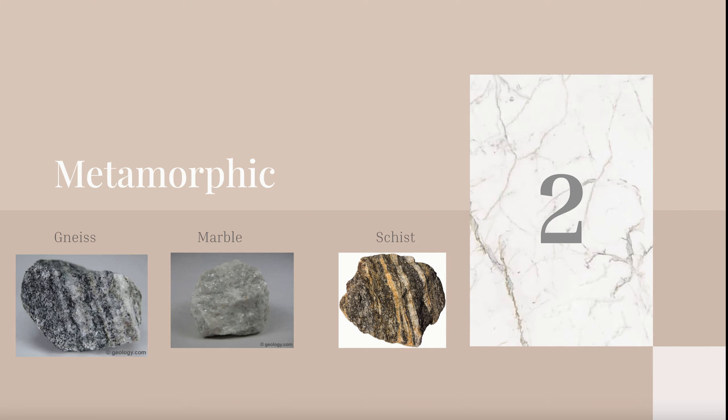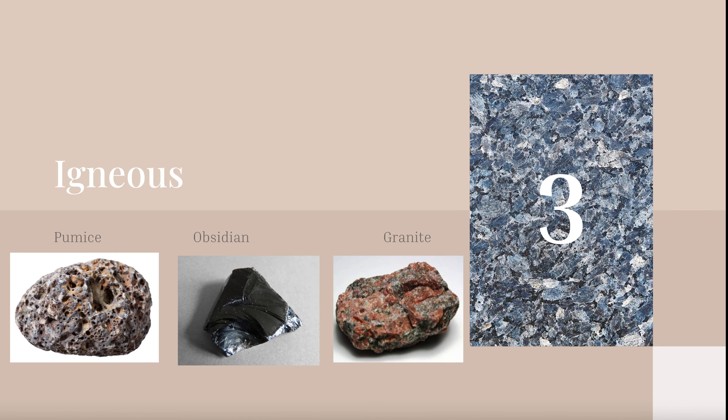Some examples of metamorphic rocks are gneiss — that's how you say that word — marble, and schist. Those are three different types of metamorphic rocks. For igneous rocks, examples are pumice, obsidian, and granite. Go ahead and add those to your notes.